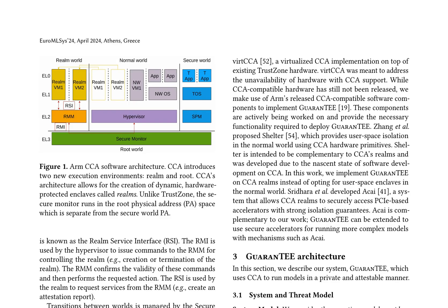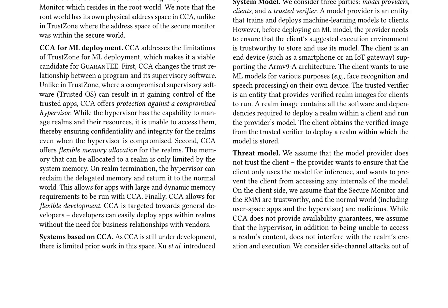GUARANTEE is a system that utilizes ARM's Confidential Computing Architecture, CCA, to run machine learning models in a private and testable manner. It involves three parties: model providers, clients, and a trusted verifier. Model providers train and deploy ML models to clients, ensuring the client's execution environment is trustworthy before deployment. Clients are end devices supporting the ARM 9A architecture, seeking to use ML models on their own devices. The trusted verifier provides verified Realm images containing all software and dependencies required to deploy a Realm and run the provider's model. The threat model assumes the model provider does not trust the client, aiming to prevent access to any model internals. The secure monitor and RMM are considered trustworthy, while the normal world, including user space apps and the hypervisor, are assumed to be malicious.